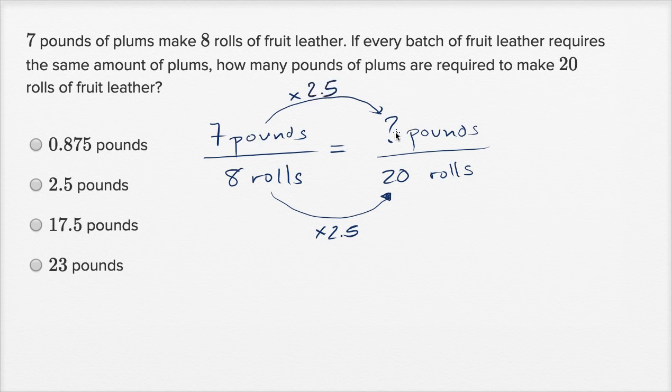And what's seven times 2.5? Let's see, seven times two is 14. Seven times five is 3.5. Fourteen plus 3.5, this is going to be 17.5 pounds. And that's this choice right over here.